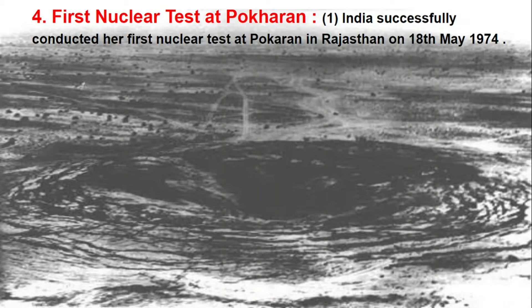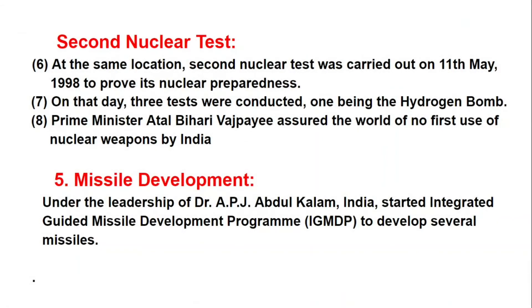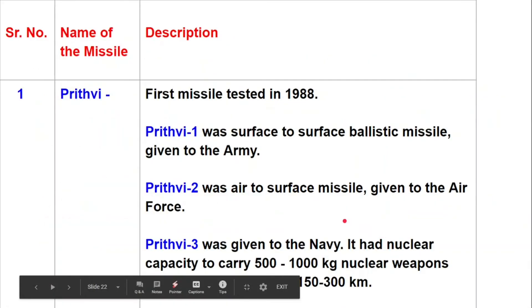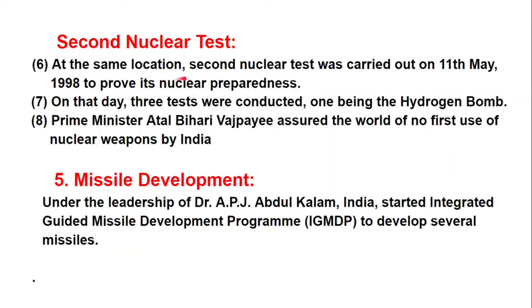Twenty-four years after the first test, the Indian Defense Research and Development Organization and Atomic Energy Commission conducted five more nuclear tests on 11th May 1998. The second nuclear test was carried out on 11th May 1998 to prove India's nuclear preparedness. On that day, three tests were conducted, one being a hydrogen bomb. Prime Minister Atal Bihari Vajpayee assured the world of no first use of nuclear weapons by India.